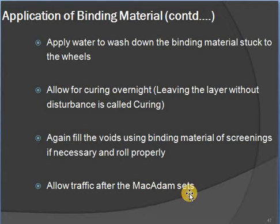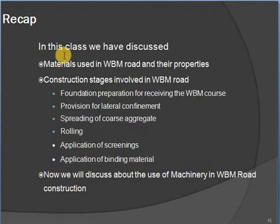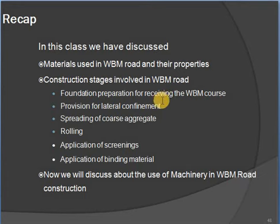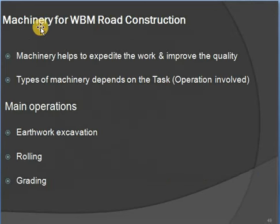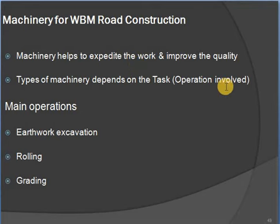This completes the process of a WBM (Water Bound Macadam) road. Recap: we discussed materials used in WBM road and their properties, and construction stages — foundation preparation, lateral confinement, spreading coarse aggregate, rolling, application of screenings, and application of binding material. Now we discuss machinery used in WBM construction. Machines help expedite work and improve quality; types depend on the task. Main operations are earthwork excavation, rolling, and grading.